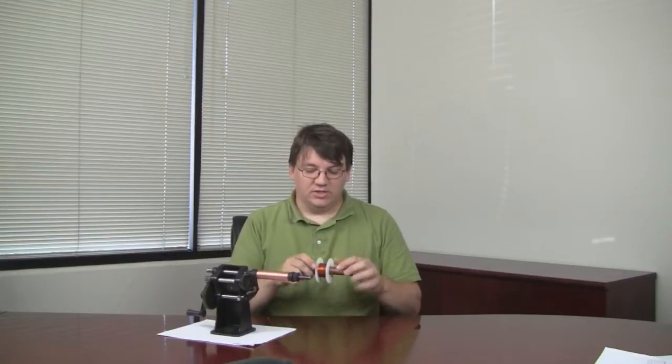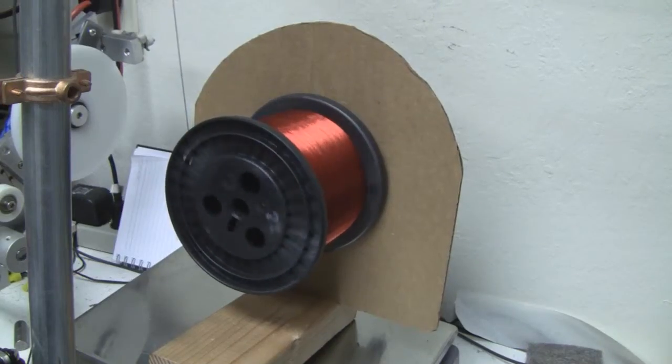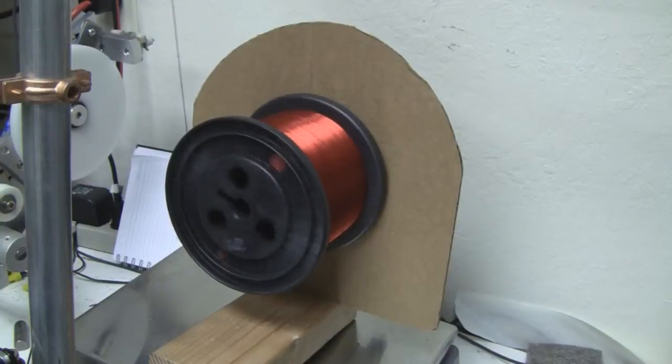The other method that can be used is the rotational style, and this is where you would support your spool on some sort of axle, perhaps a pipe or a bolt or something along these lines. When you despool off of it, the spool actually will spin.